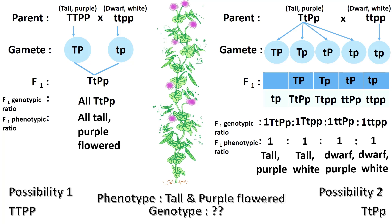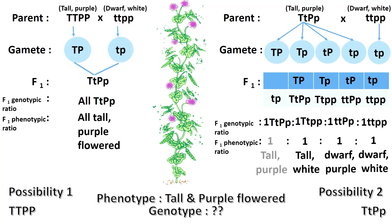However, if the mysterious individual is of this genotype, after test cross, 25% of its offspring will be tall and purple flowered, another 25% will be tall and white flowered, another 25% will be dwarf and purple flowered, and the remaining 25% will be dwarf and white flowered, giving the ratio of 1:1:1:1.